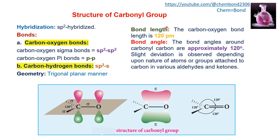The bond length is 120 picometers and the bond angle is approximately 120 degrees. A slight deviation is observed depending upon the nature of the atom or group attached to the carbon in various aldehydes and ketones. The bond angle is approximately 120 degrees, but there are some slight deviations due to bulky or lighter groups.